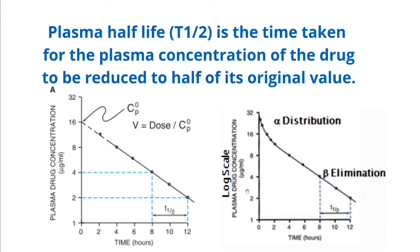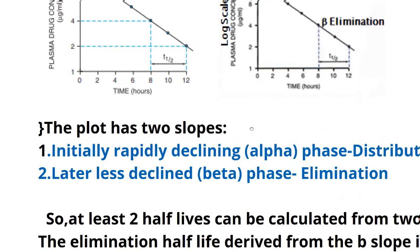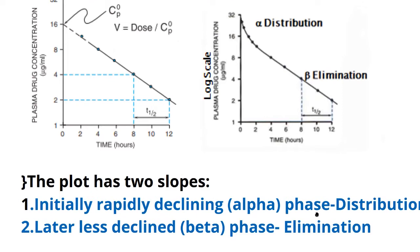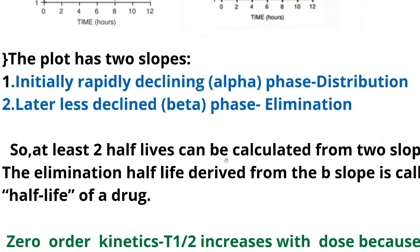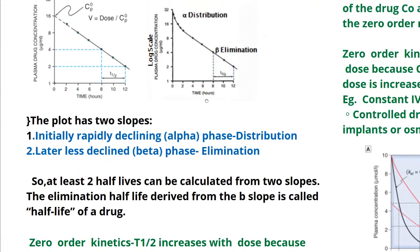Looking at the picture on the right, this is on a log scale, whereas the previous was on a linear scale. You normally plot on a log scale if the difference in the data points is relatively high. The first, more steeply decreasing slope is generally due to the distribution of the drug within the body tissues, and the more gradual slope is due to the elimination of the drug. So the plot has two slopes: the initial rapidly declining alpha phase denotes distribution, and the later, less declining beta phase denotes elimination. At least two different half-lives can be calculated from these two slopes, and the elimination half-life derived from the beta slope is what we call the half-life of the drug.